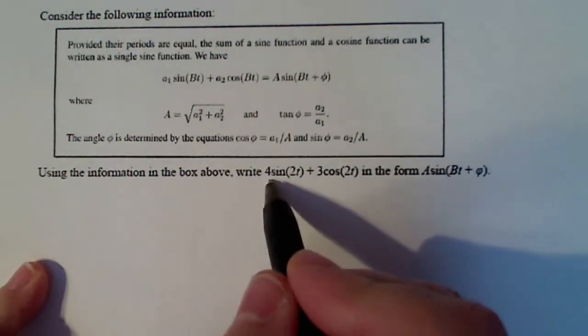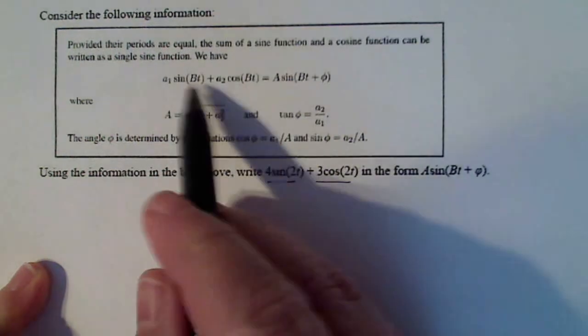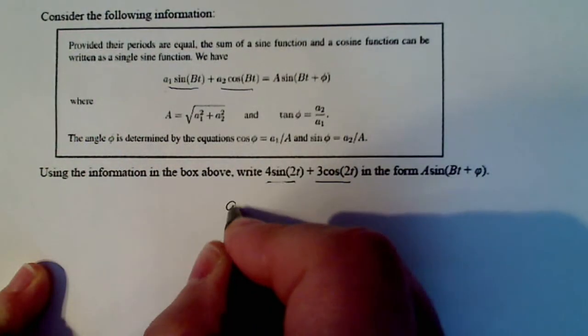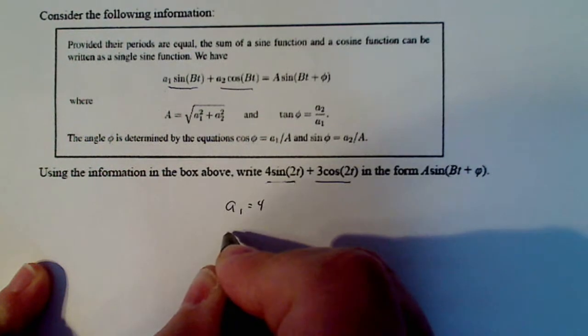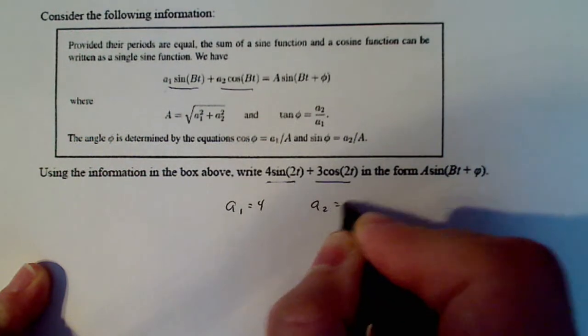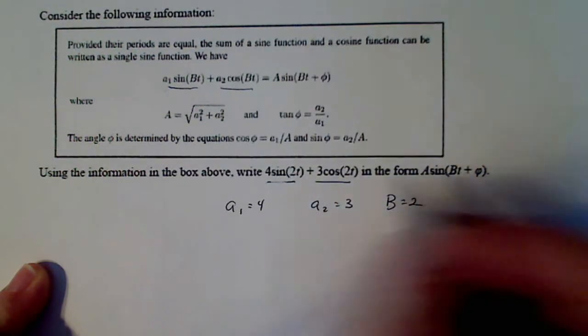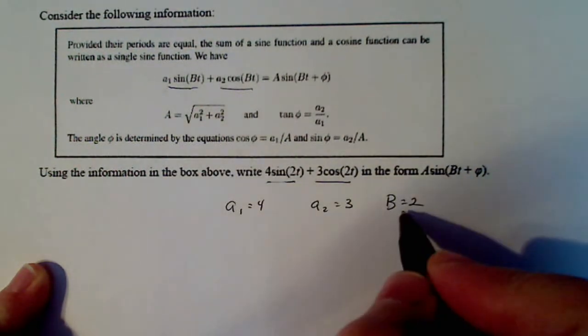Now, if I look at this guy here and I compare it to this guy here, this tells me that a1 is equal to 4, a2 is equal to 3, and b is equal to 2. So I've just drawn all that information out of there.